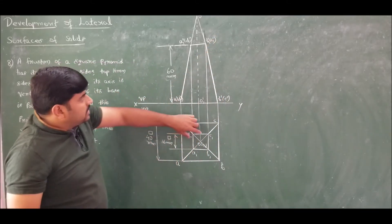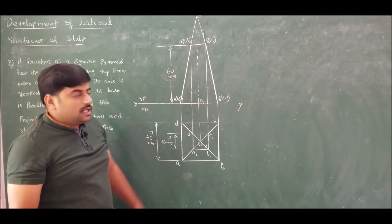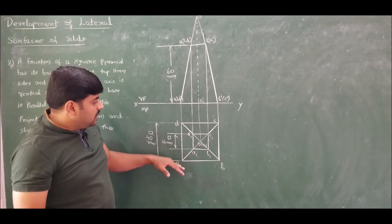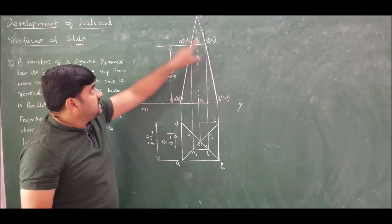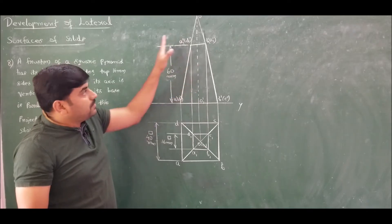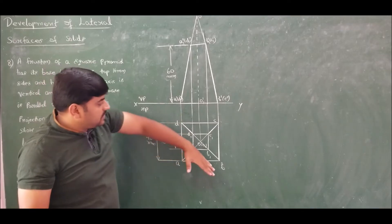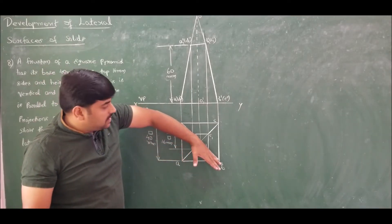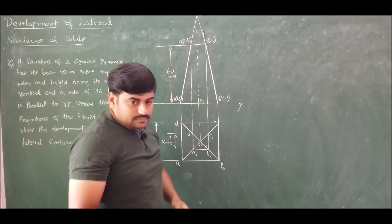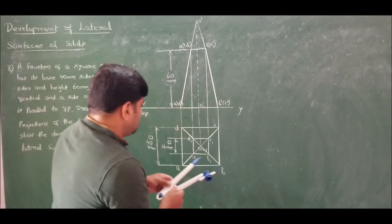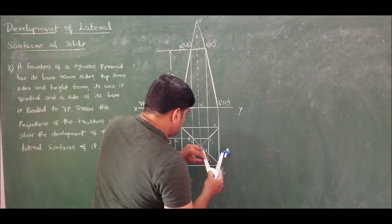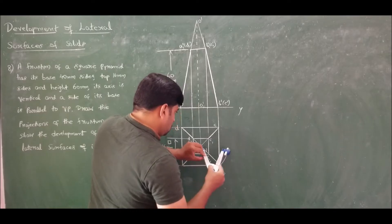None of the slant edges are parallel to VP. We have four slant edges: AO, BO, CO, and DO. In the top view, none of them are parallel to VP, so none give the true dimension. To obtain the true slant edge length, make one slant edge parallel to VP and then take the projection. Keeping O fixed, rotate one edge to be parallel to VP.